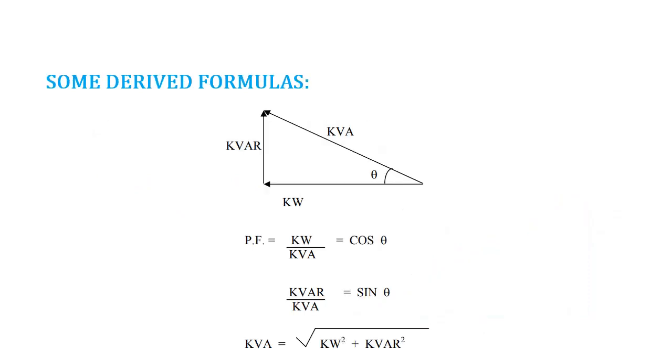There are some more formulas as well. Cos theta is basically the power factor, it equals kW over kVA. Sin theta equals kVAR over kVA and if you apply Pythagoras theorem on this right angle triangle then we get this formula.